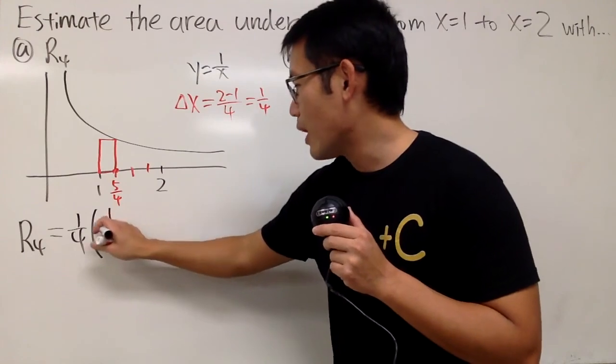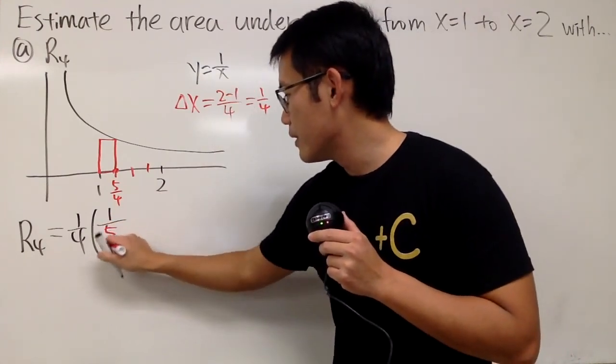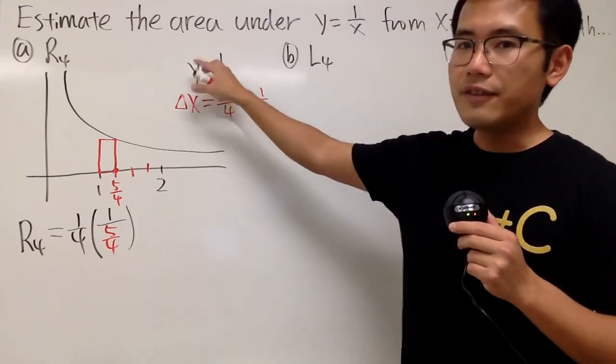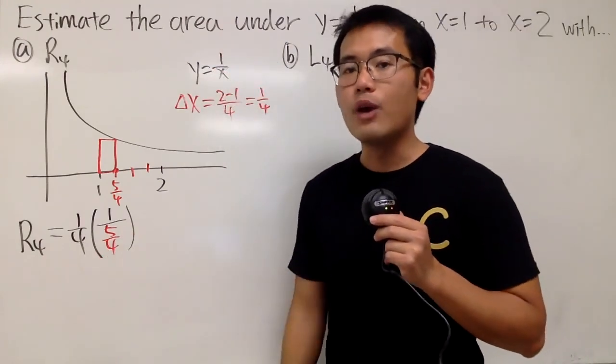And we can just write that down, 1 over 5 over 4. All right, so that's the idea. And sometimes you can also write it as f of x equals 1 over x, and then this is just going to be f of 5 over 4.